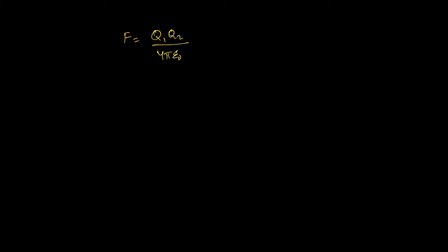Our equation for the electric force between two charged particles is given by Coulomb's law. If you go back to the chapter on gravitation, you're going to see something that looks very similar. R squared shows up in the denominator — so the farther away you are from something, the less force there's going to be. The strength depends on some property of both objects, like mass or charge, and then there's some kind of a constant in there.